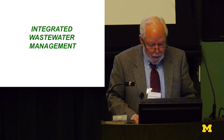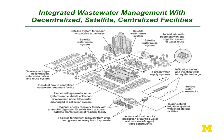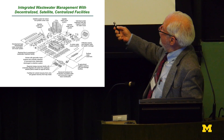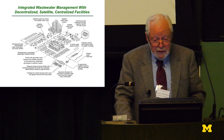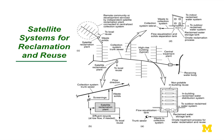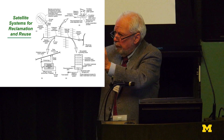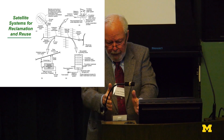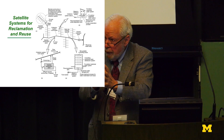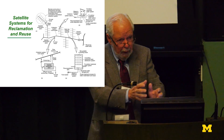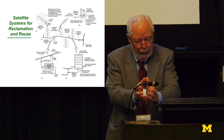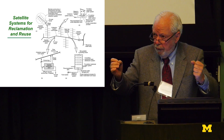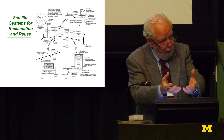Another element of the future will be integrated wastewater management: a combination of satellite treatment, centralized treatment, reuse opportunities, and direct potable. There are two key types of satellite systems. The interception type intercepts all wastewater from a building before it ever enters the collection system — you treat it and reuse it on site. The extraction type extracts wastewater from a collection system, uses it locally, and discharges all the solids back to the system.